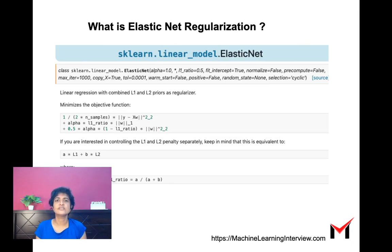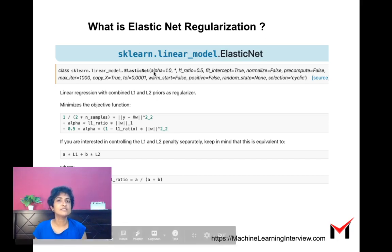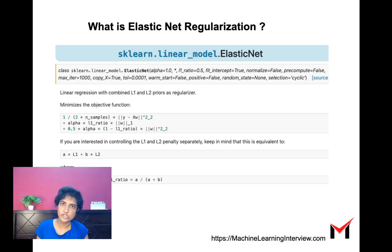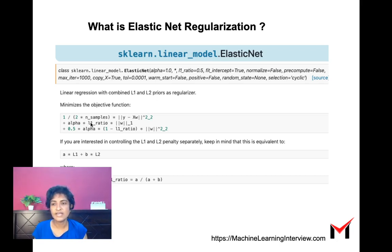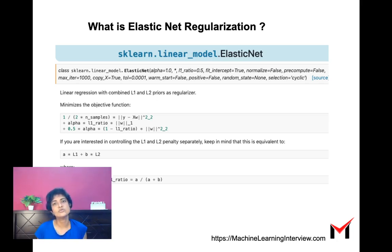Elastic net regularization is available in scikit-learn and is easy to implement. We have two parameters: alpha, which determines the overall level of regularization, and l1_ratio. The loss function becomes: main loss plus alpha times l1_ratio times the L1 regularization term, plus 0.5 times alpha times (1 minus l1_ratio) times the L2 regularization term. If l1_ratio is 1, we apply only lasso regularization; if l1_ratio is 0, we apply only ridge regularization; and values between 0 and 1 give a combination of both.